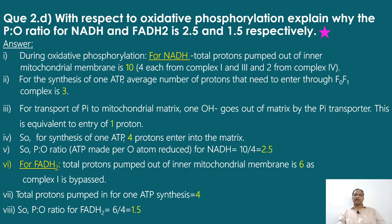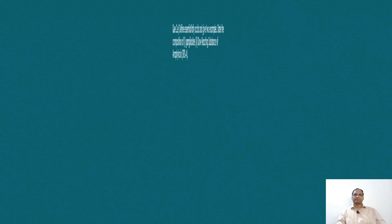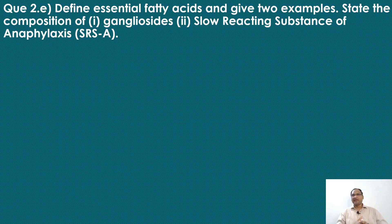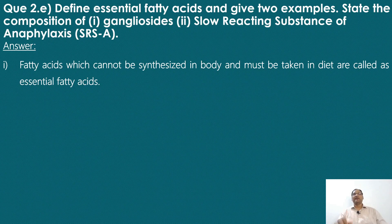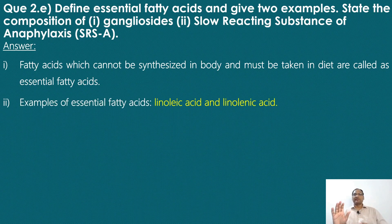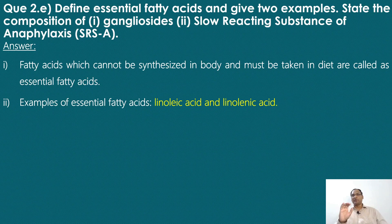That is enough for two marks. The next question: define essential fatty acids and give two examples; state the composition of gangliosides and slow reacting substance of anaphylaxis. Essential fatty acids are fatty acids that cannot be synthesized in the body and therefore must be taken in the diet. Examples are linoleic acid and linolenic acid. Some books also mention arachidonic acid, but it is not strictly essential as it can be synthesized from linoleic acid.